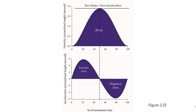Now let's compare our velocity and acceleration curves. First, note that we begin by speeding up — we have a positive slope, so we have a positive acceleration. Then we reach a peak where we will have zero acceleration, however briefly, and then we start to slow down. When we slow down, we have a negative slope, and therefore a negative acceleration.